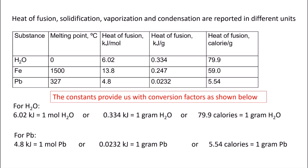For example, I have three different substances shown here: water, iron, and lead, with their respective melting points. The heat of fusion can be given in kilojoules per mole, kilojoules per gram, and calories per gram. These constants provide us with conversion factors. For H2O using kilojoules per mole: 6.0 kilojoules equals one mole of H2O. If using 0.334 kilojoules per gram, that means 0.334 kilojoules melts one gram of H2O. And if using calories per gram, it requires 79.9 calories to melt one gram of H2O. Since you can have these different types of units, you have to be careful when you read these problems.